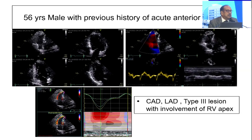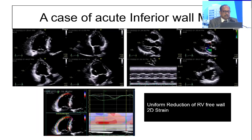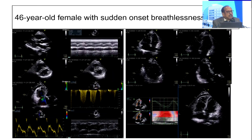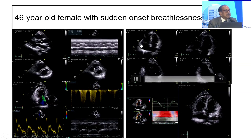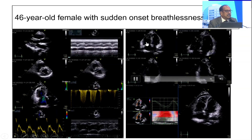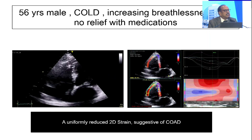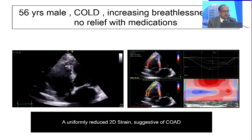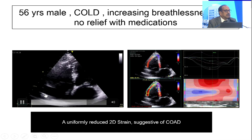Why is my RV GLS reduced in apical segments? On the contrary, in inferior MI, you see uniformly reduced non-dilated RV. A third important application: a patient presenting with sudden onset breathlessness — apical GLS shows apical sparing, with mid and basal segments reduced. This gives a lot of value. An important factor is how to differentiate this from chronic obstructive lung disease: the same patient with acute breathlessness — if they have apical sparing, it's possibly pulmonary embolism; if uniformly reduced RV GLS, it's possibly chronic obstructive lung disease.